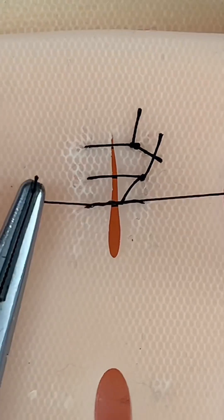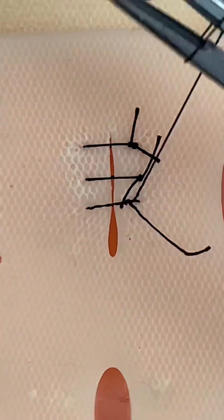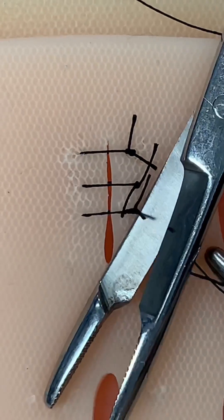The surgeon's knot supporters say that the double throw creates more friction, which doesn't allow the first loop to unravel before it can be reinforced with the next knot.